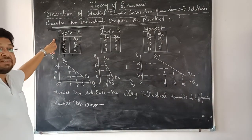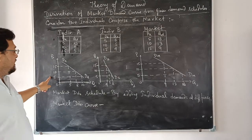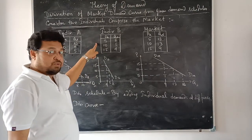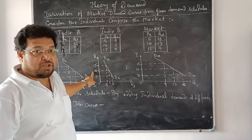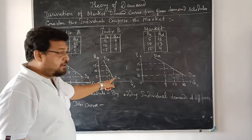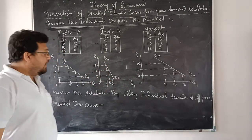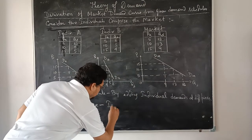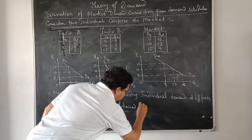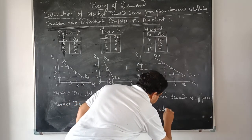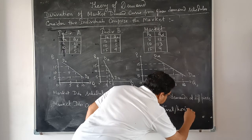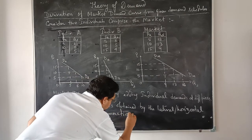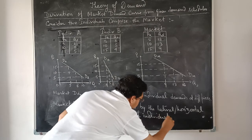With respect to individual A's demand schedule, you get the demand curve for individual A, given by DA. With respect to individual B's demand schedule, you get the demand curve for individual B, given by DB. The market demand curve is obtained by the lateral or horizontal summation of individual demand curves.